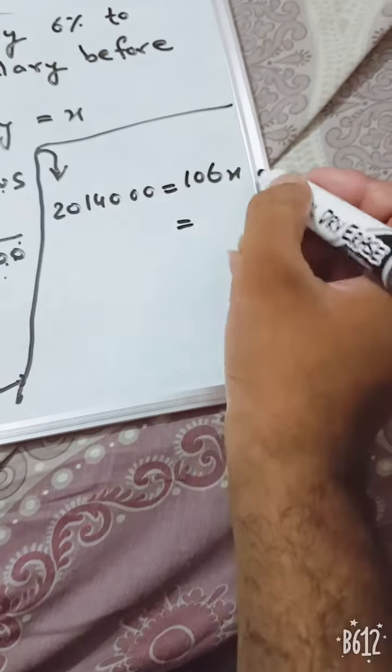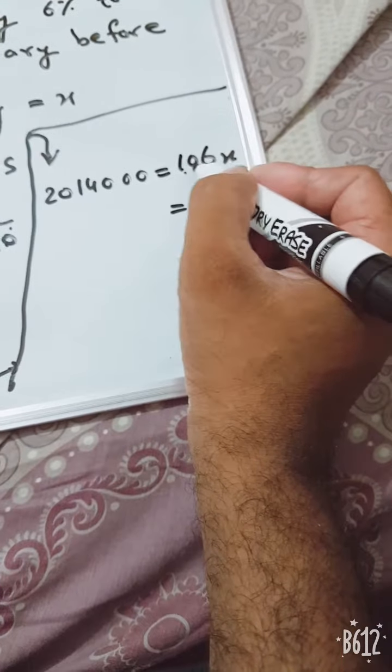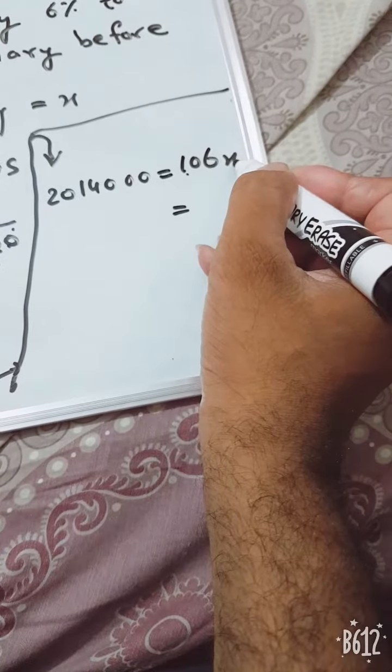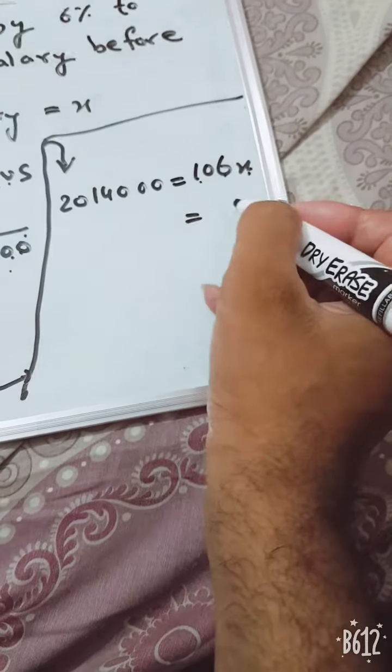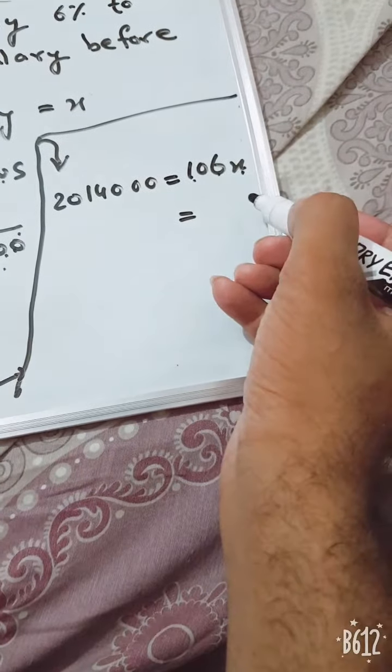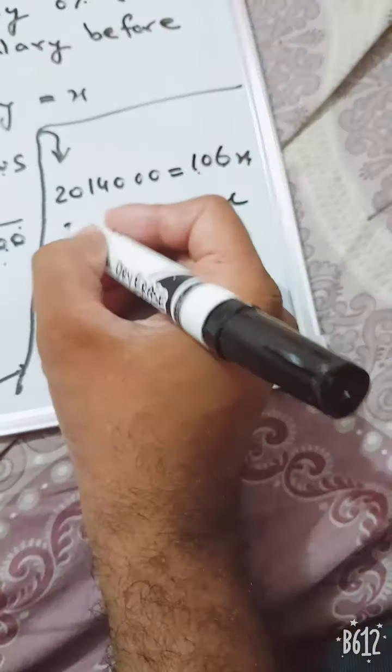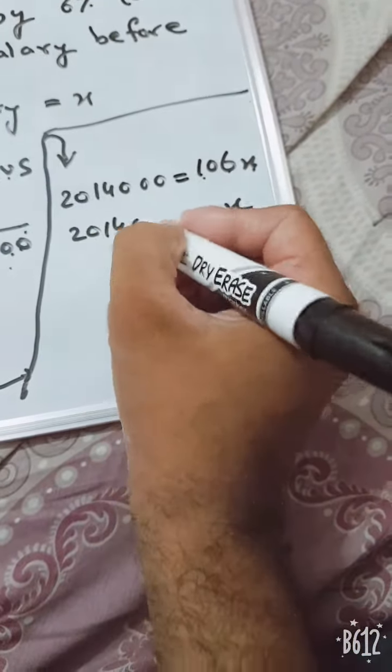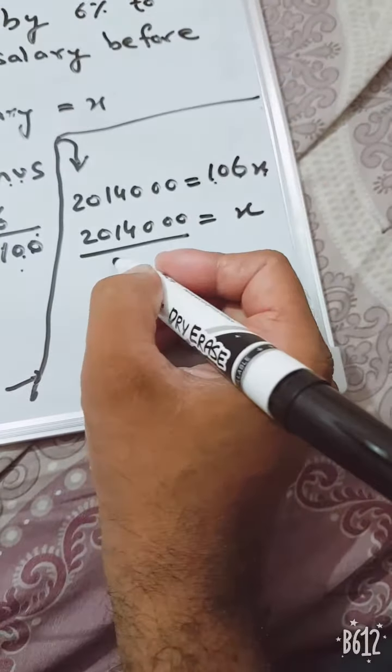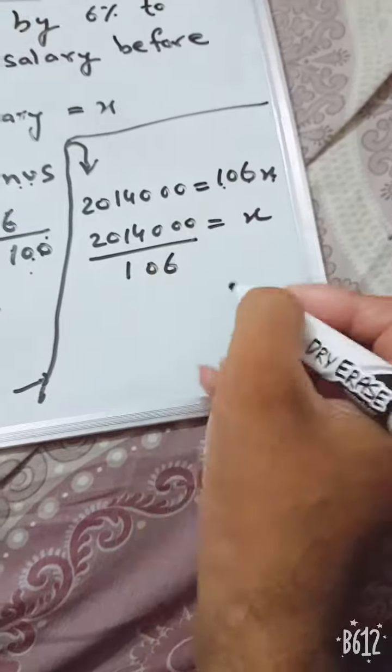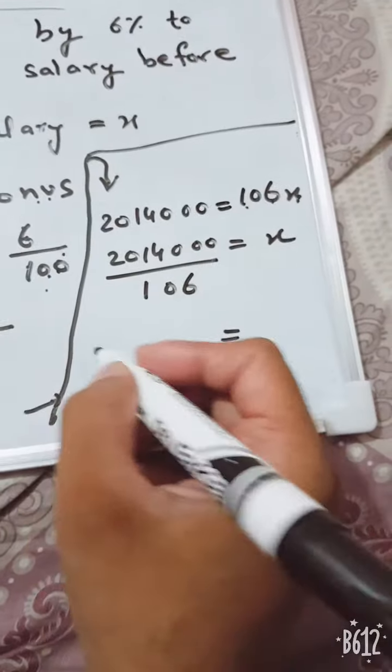Now our duty is to make x separate from 106. Since 106 is being multiplied with x, it will go to the other side because we have to find the previous salary. Previous salary has been supposed as x. So x should be alone here. £2,014,000 as it is, 106 will travel to the other side and will be divided. And if you use your calculator, you will get the answer £19,000.